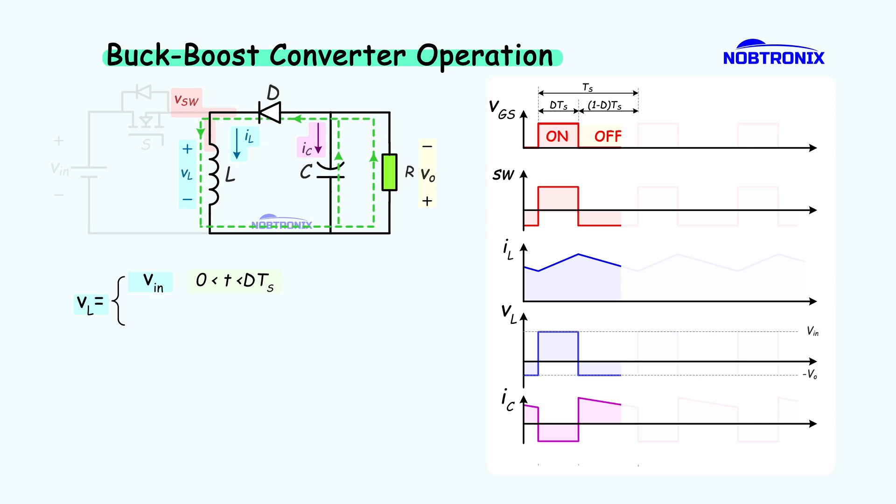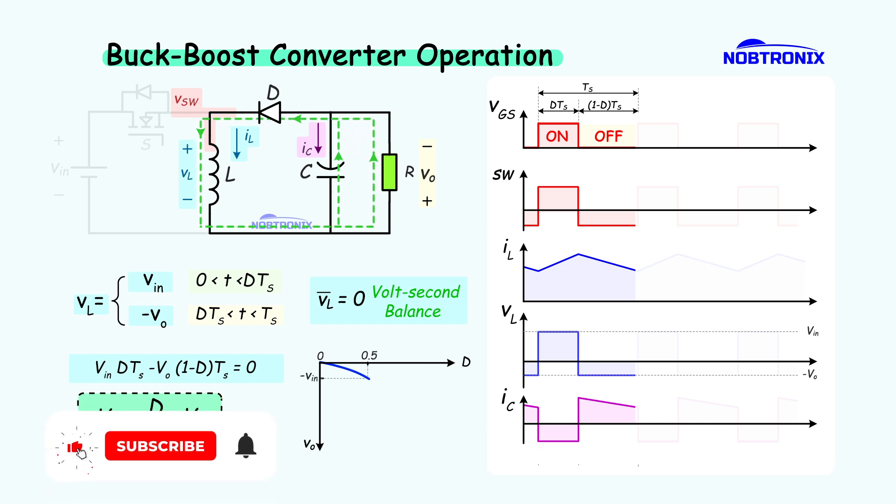In this mode, the inductor sees a voltage equal to the negative of the output voltage. Again, using volt-second balance, we can find the relationship between input and output voltage. At zero duty cycle, the output is zero. At 50%, the output equals the input, and as the duty cycle approaches 100%, the output voltage shoots up. Technically, it goes to infinity.